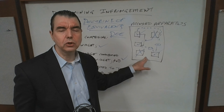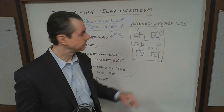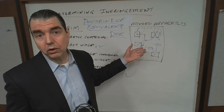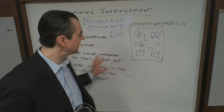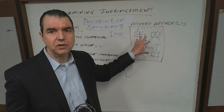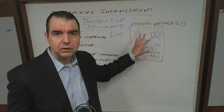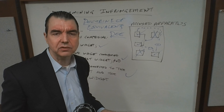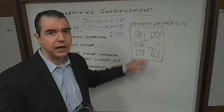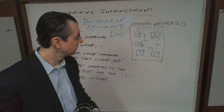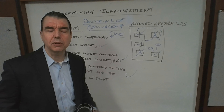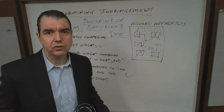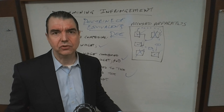In summary, there are two types of infringement. There is literal infringement, where each limitation of the claim must be found to be literally present in the accused infringing apparatus. Under a doctrine of equivalence analysis, one or more limitations may not be literally present, but some component or aspect of the accused apparatus performs substantially the same function in substantially the same way, in which case it would be infringing under doctrine of equivalence.